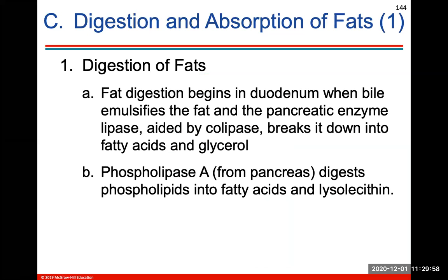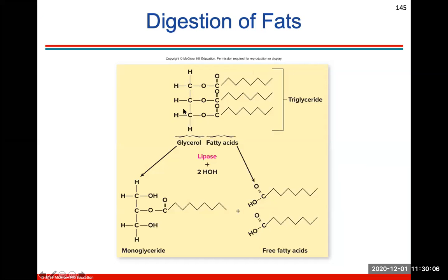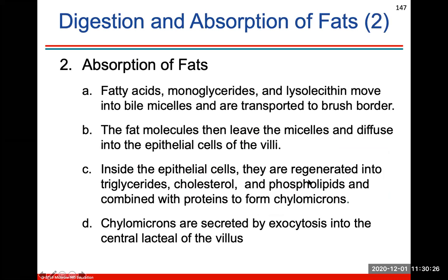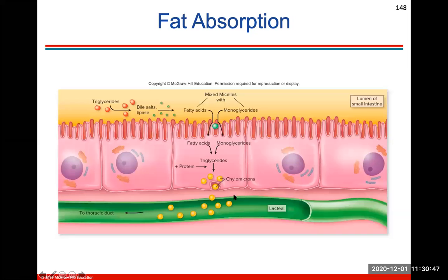Fat digestion begins in the duodenum when bile will emulsify the fat and the pancreatic enzyme lipase will break it down into glycerol and fatty acids. Here's how fat emulsification and digestion works: fat droplets from your stomach are emulsified by bile from the liver and gallbladder, making it easier for lipase to break them down. Absorption of fats moves into bile micelles and transports them to the brush border, where the central lacteal of the villus picks them up. The lacteals help absorb fats and carry them to the thoracic duct.